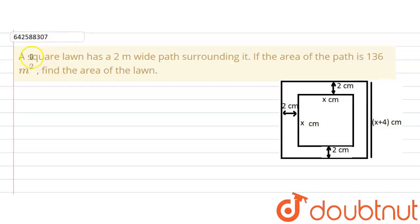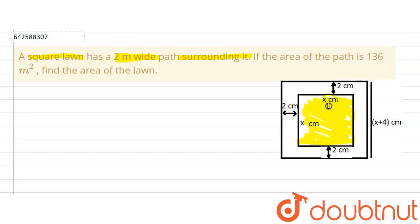The given question says that a square lawn has a two meter wide path surrounding it. So there is a square lawn, and there is a path surrounding it. The width of the path is two meters on all four sides of the square.